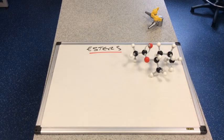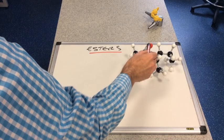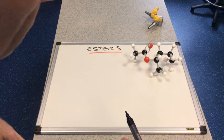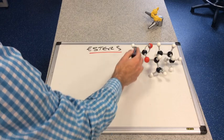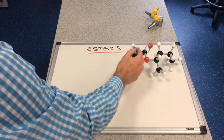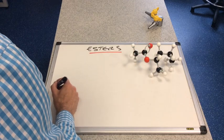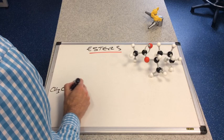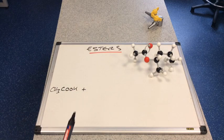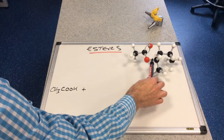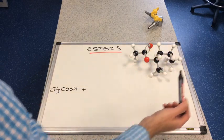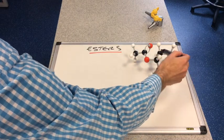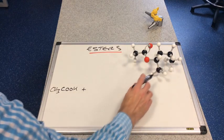Let's look at a slightly more complicated ester. You can see the R-C(=O)-O-R ester group. The ethanoate part tells us the carboxylic acid is ethanoic acid (CH₃COOH). For the alcohol, the single-bonded oxygen is joined at carbon number 2 of a five-carbon chain, so the alcohol is pentan-2-ol.